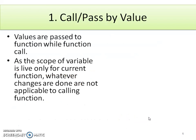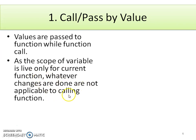Let's start with the first type: call by value. Values of variables are passed to the function while calling it. Since the scope of a variable is live only for the current function, whatever changes are made are not applicable to the calling function. Let's explain this with an example.